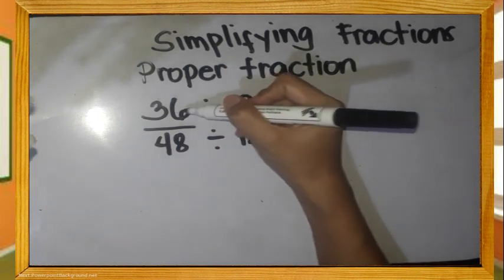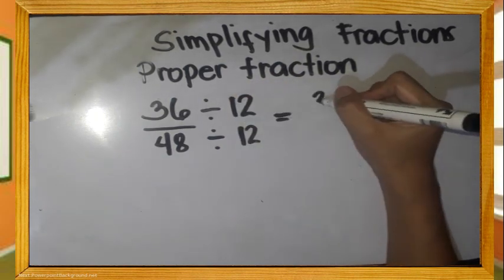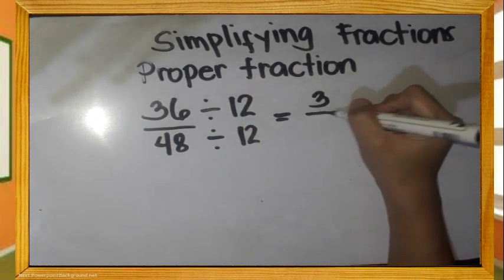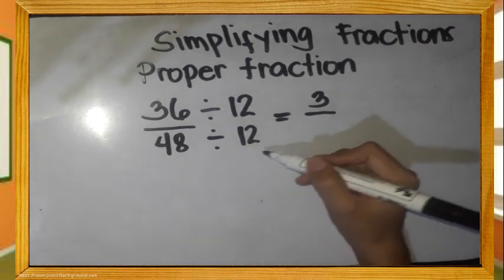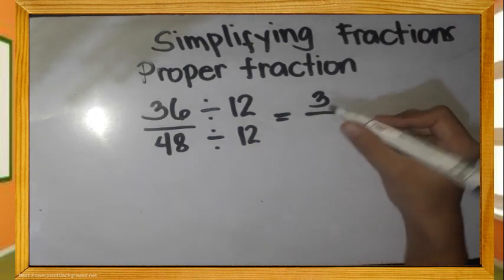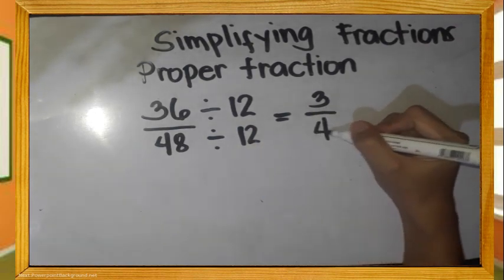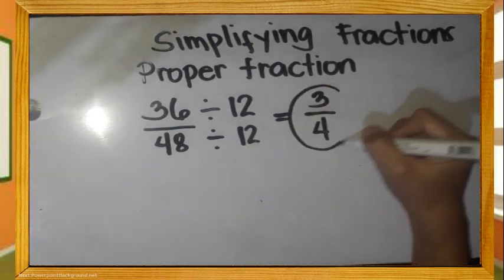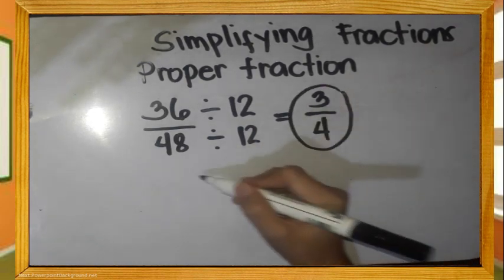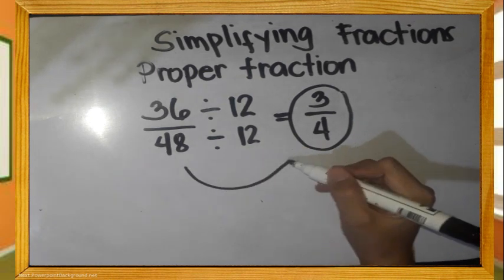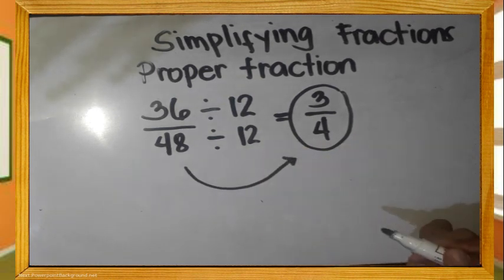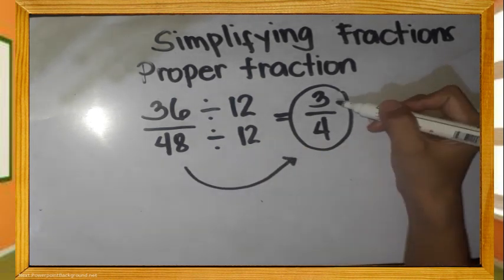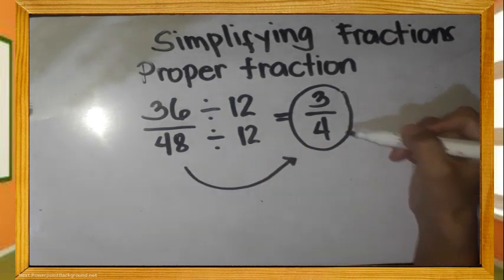36 divided by twelve is three. Forty-eight divided by twelve is four. Ang simplest form ng 36 over 48 ay three-fourth.